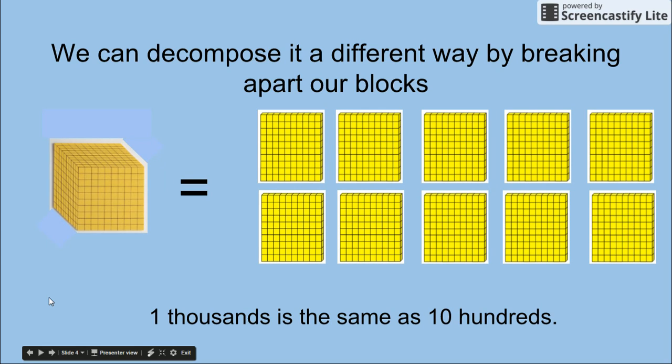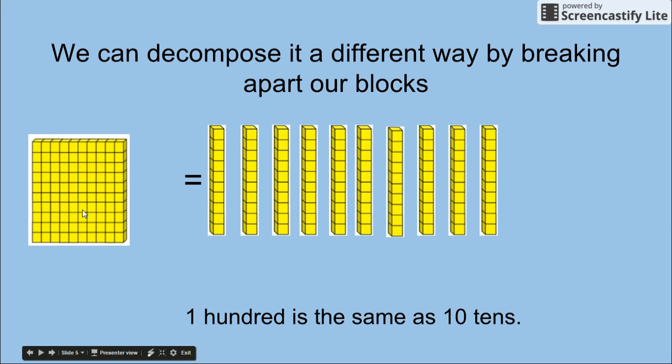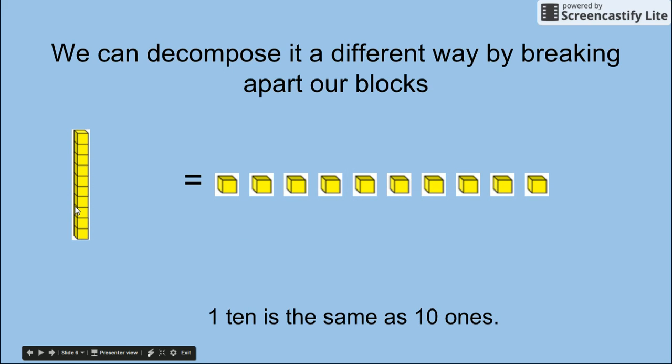We can decompose in a different way by breaking apart our blocks. 1,000 is the same as 10 hundreds. 100 is the same as 10 tens. 1 ten is the same as 10 ones.